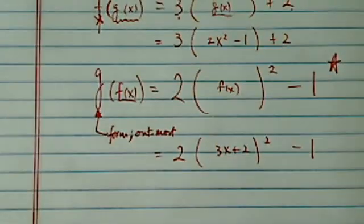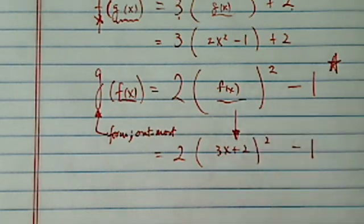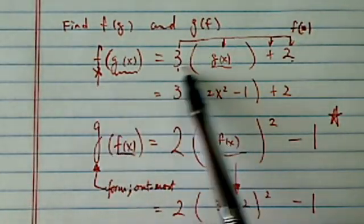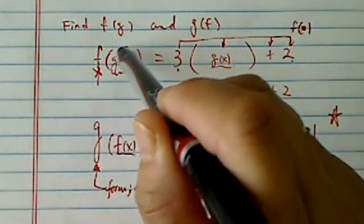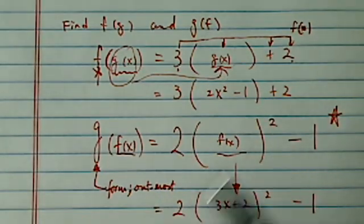So all I did was substitute what f of x is. One more time. What you do is you start from the outmost, copy the form, and then put whatever is in here into the form parentheses. Same thing here.